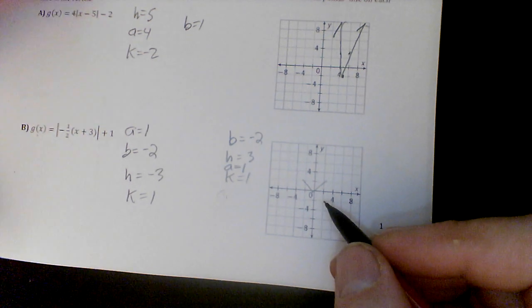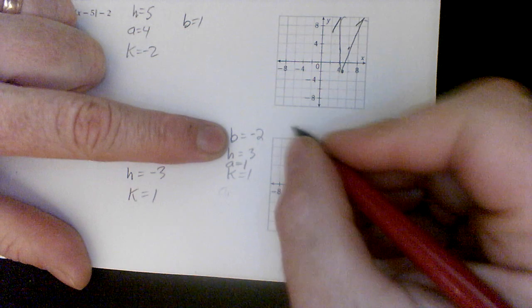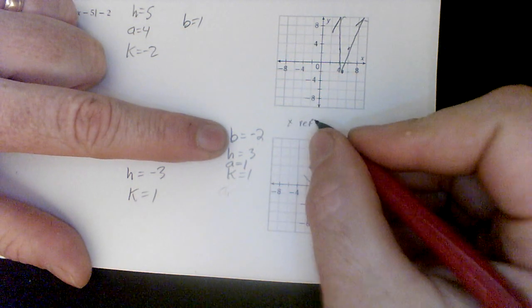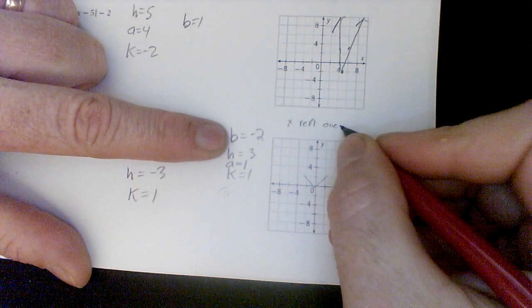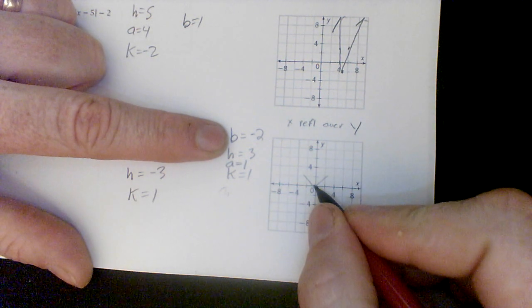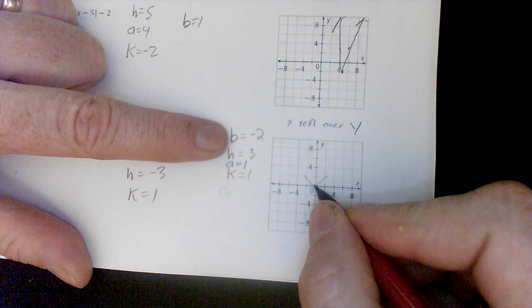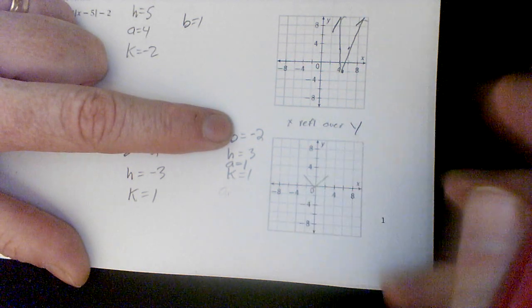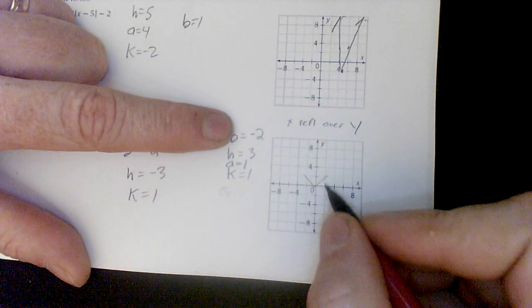All right. This b does something. So this b, it's a reflection over y, which does nothing. If I reflect this over the y, it has no effect whatsoever. But it does another thing. It's a horizontal stretch of 2.